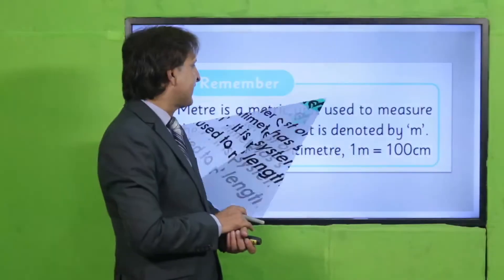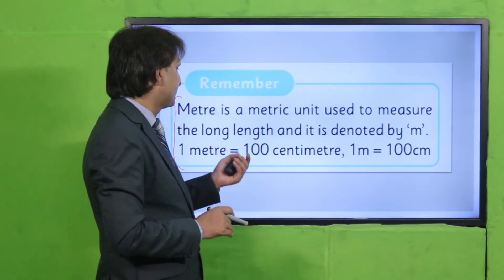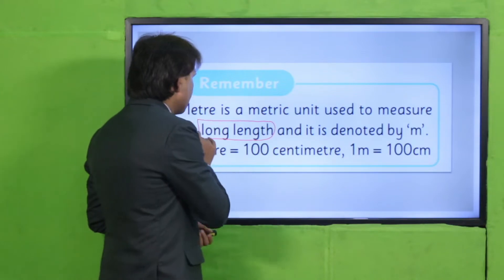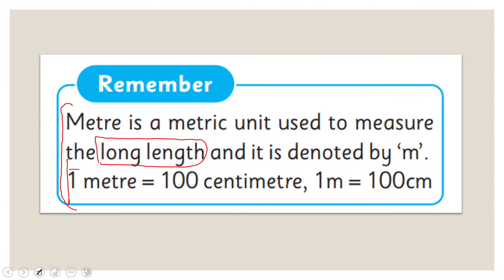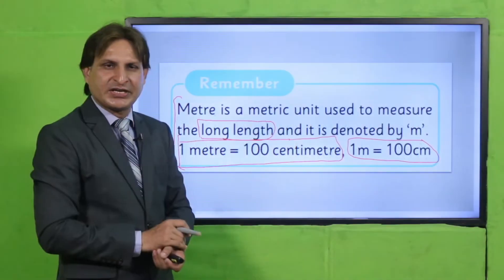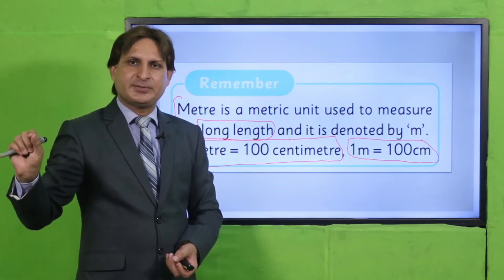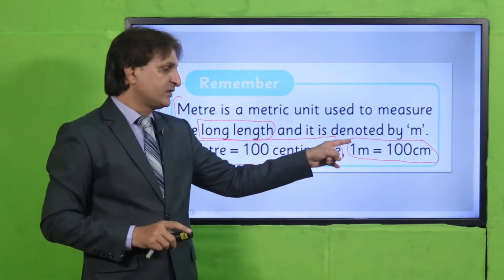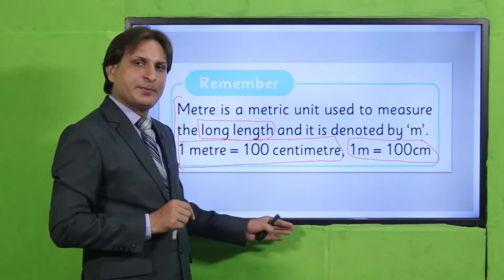Ab aajyen next. Jo cheezein aapne yaad rakhni hain: hum log meter kyun use karte hain? Long lengths measure karne ke liye. Aur one meter mein kitne centimeter hote hain? One hundred. Yeh aap logon ko yaad rakhna hai — one meter is equal to hundred centimeters, means there are hundred centimeters in one meter.